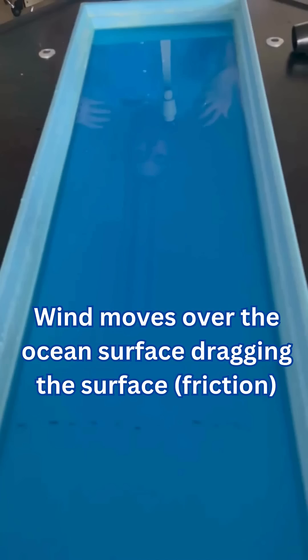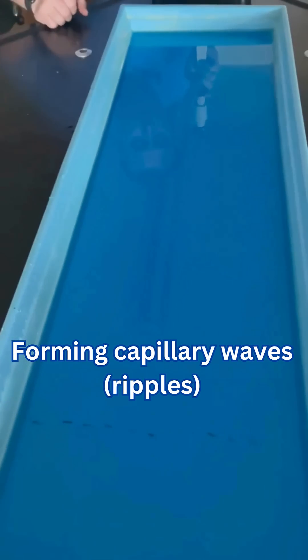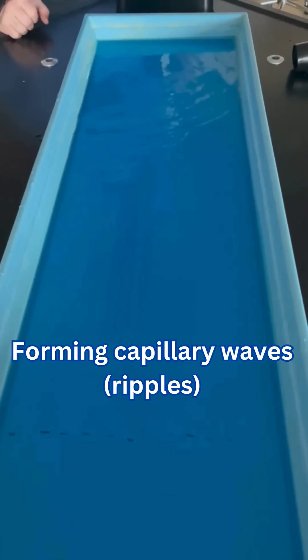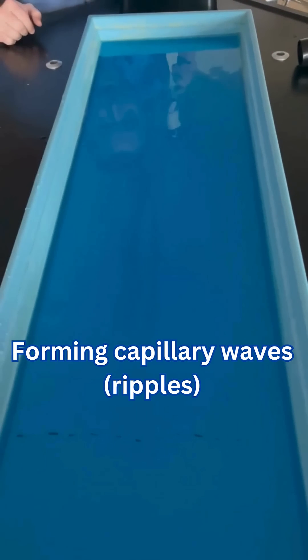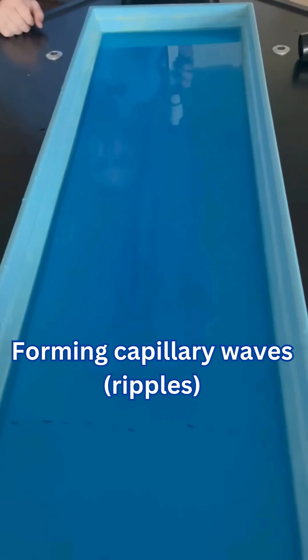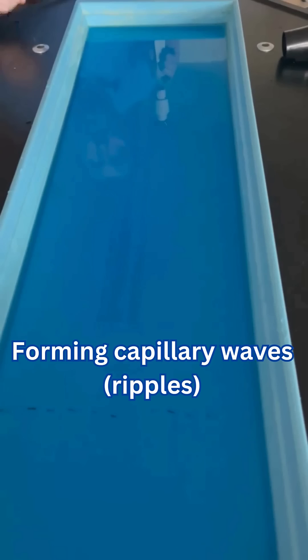So if I add some wind to the surface, you see here we have a little bit of capillary waves, which are really tiny ripples on the surface that you find in lakes and ponds.